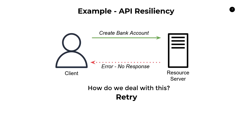You want to use something called exponential backoff, where you wait a period of time. If you fail again, you wait an even longer period of time. This is a really great way to give the resource server the ability to recover, especially if it's under duress — maybe it's getting a lot of concurrent requests. Exponential backoff is a great way to take some stress off the server.